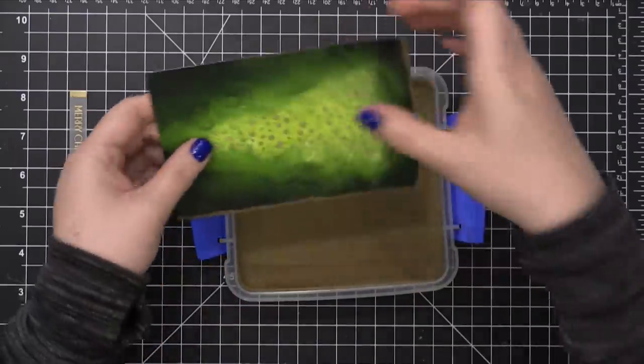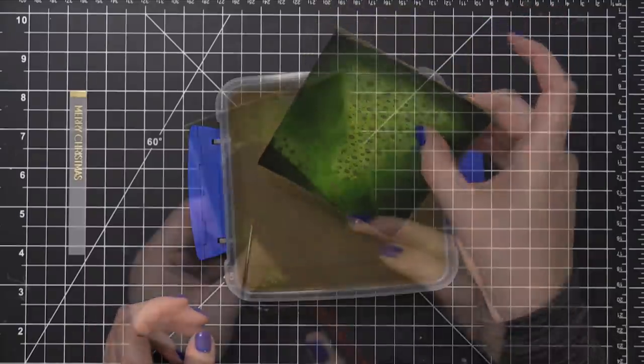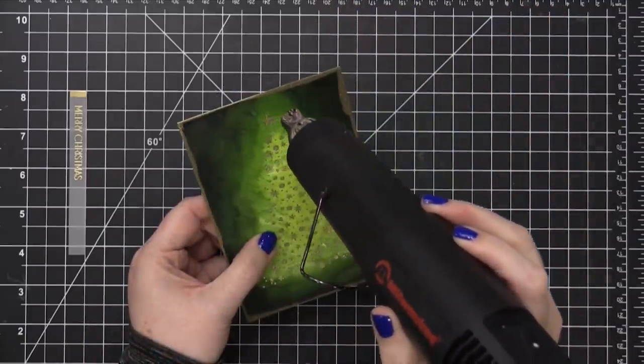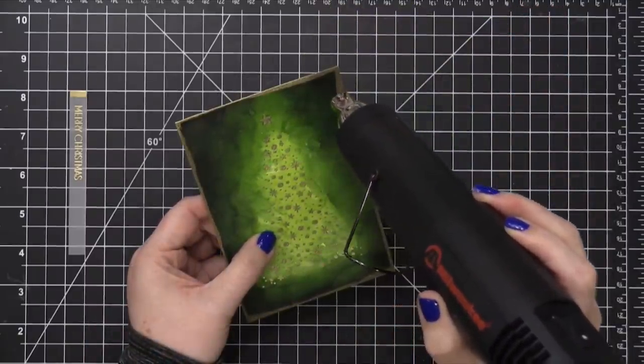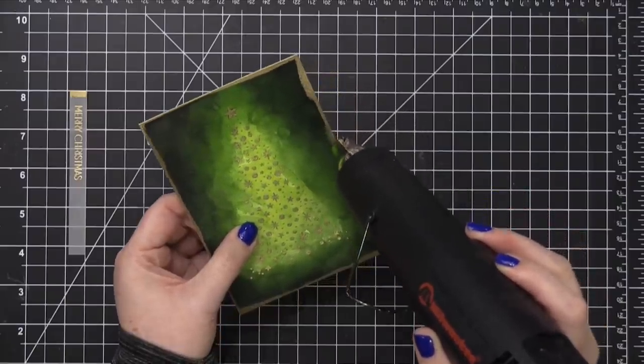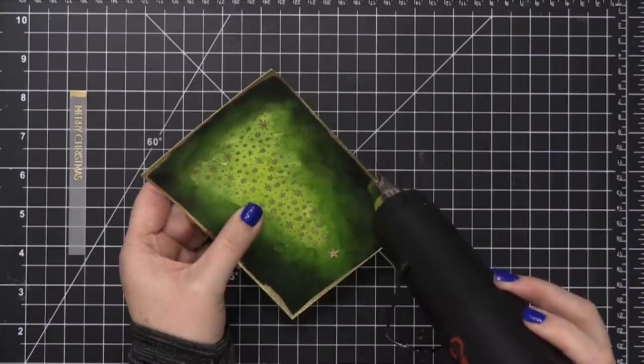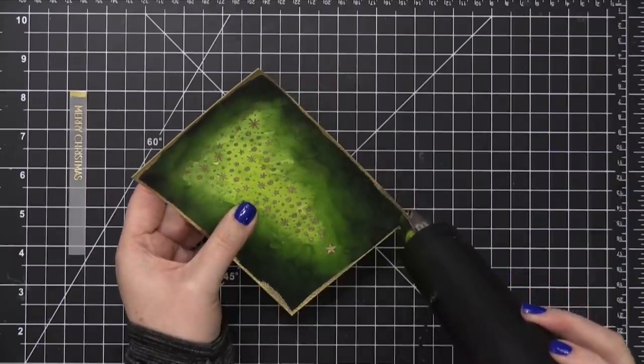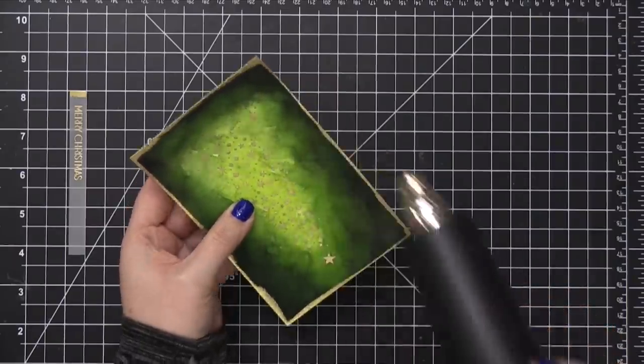Then went around the edges and heat set that till everything was smooth and melted. I really love adding gold edging like this on my holiday cards. I think it gives it a little more of an elegant look.